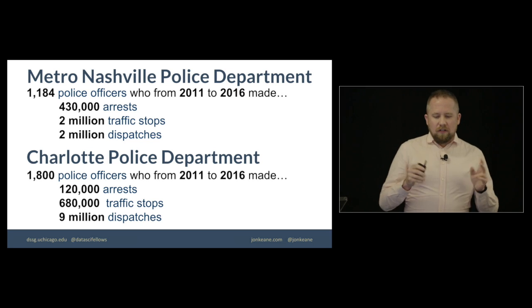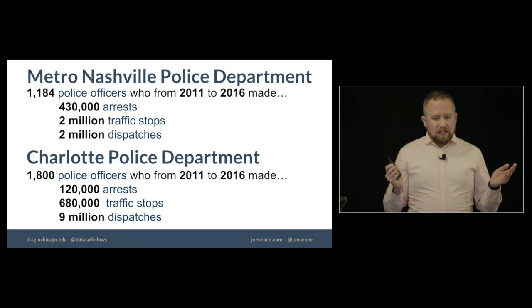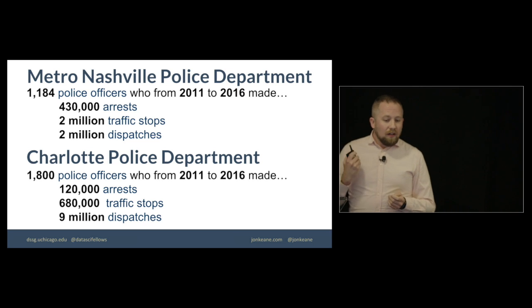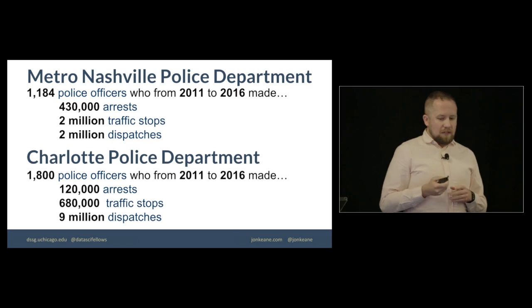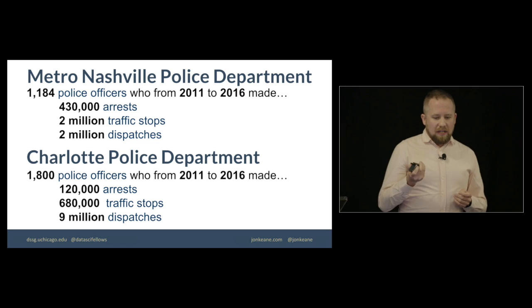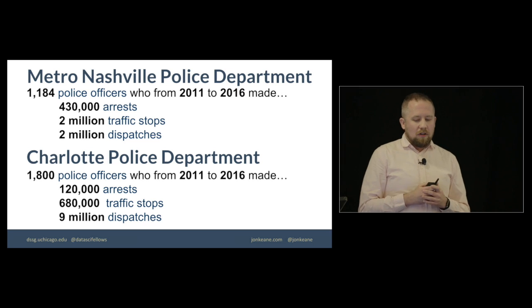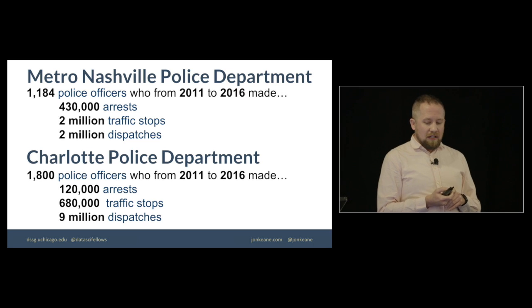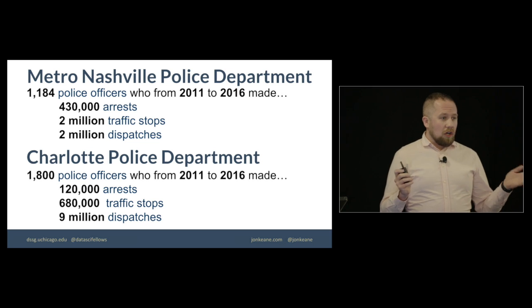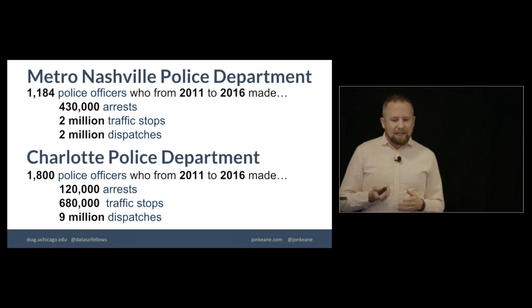So for the Nashville Police Department, there are about 1,200 police officers. And in the five years from 2011 to 2016, which is when we had data, there were 430,000 arrests, 2 million traffic stops, 2 million dispatches. For the Charlotte Police Department, we had slightly more officers. We had 1,800. And again, in that same five-year period, there were fewer arrests, 120,000, 680 traffic stops, and 9 million dispatches. So we're looking at a decent chunk of data and a decent chunk of kind of police activity.